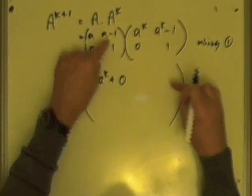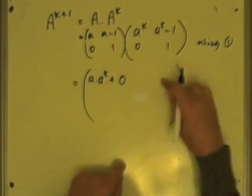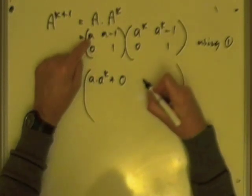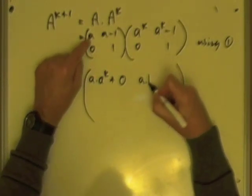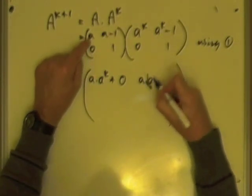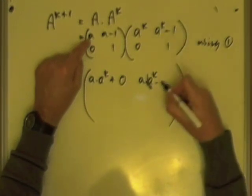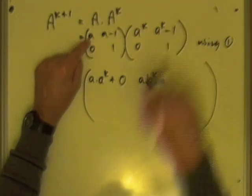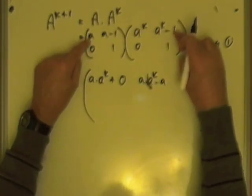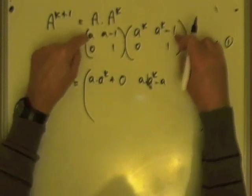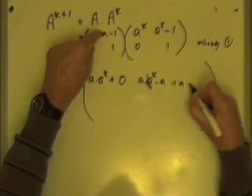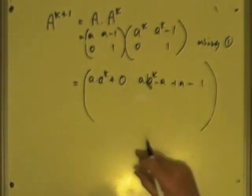Next one's got more terms in it. First row times second column, for the entry in the first row, second column. So, I've got A times both of these, well, I'll spell it out, well, no, I'll put it down. So, I've got A times A to the K, minus an A, let me move this bracket along a bit, just widen it, most seats required, plus A minus 1 times 1, so plus A minus 1.